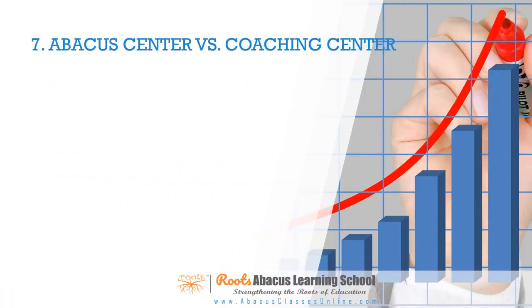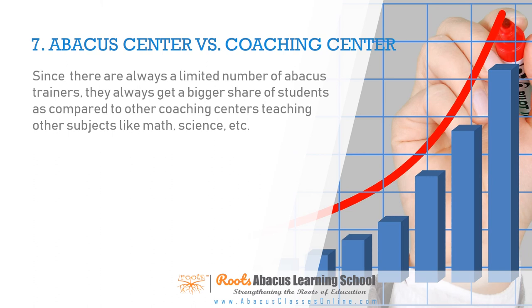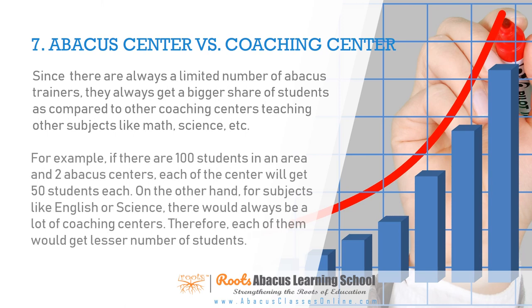Since there are always a limited number of abacus trainers, they always get a bigger share of students compared to other coaching centers teaching subjects like math, science, etc. For example, if there are 100 students in an area and two abacus centers, each center will get 50 students. On the other hand, for subjects like English or science, there would always be many coaching centers, so each of them would get fewer students.